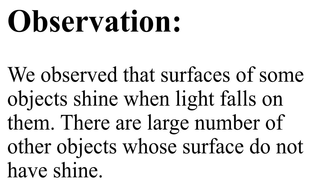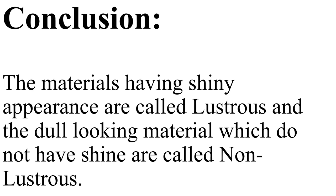Observation: We observed that the surfaces of some objects shine when light falls on them, while there are a large number of other objects whose surfaces do not have shine. Conclusion: The materials having a shiny appearance are called lustrous, and the dull-looking materials which do not have shine are called non-lustrous.